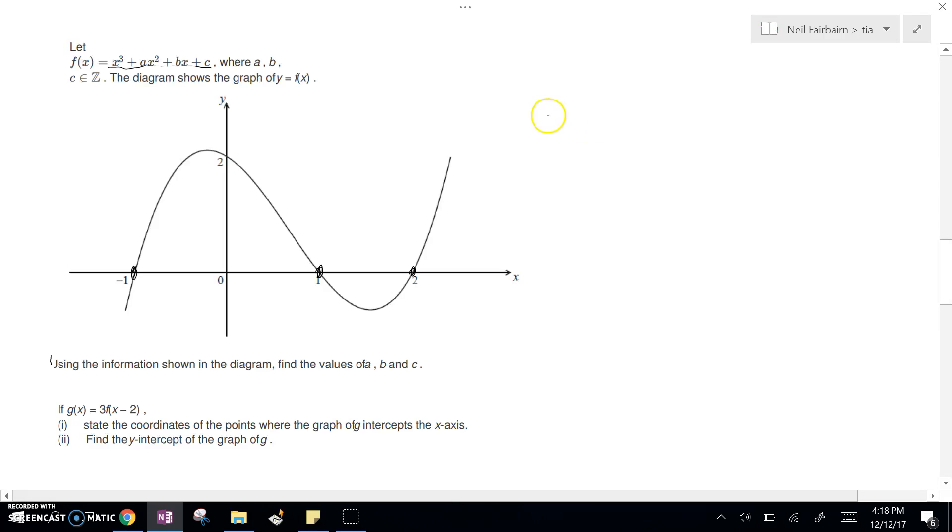So we know that f of x is equal to x plus one, x minus one, and x minus two. Now if we multiply this out, it becomes x squared minus one, times x minus two, which is equal to x cubed minus x minus two x squared plus two.